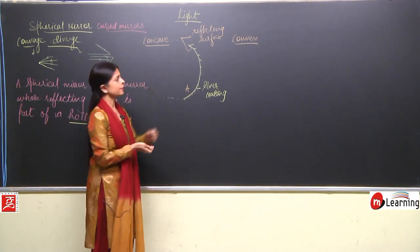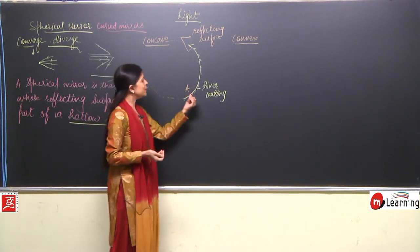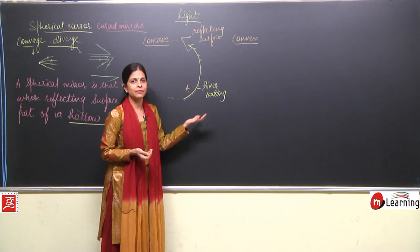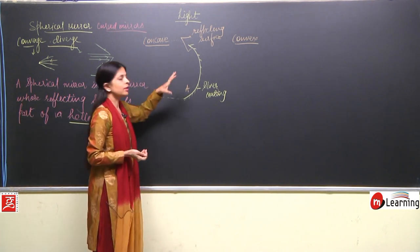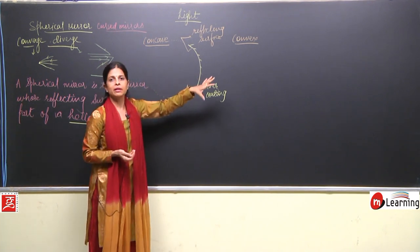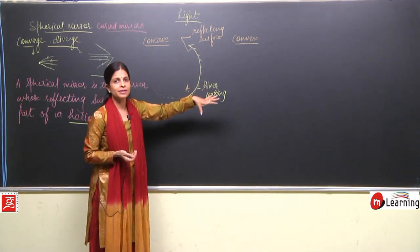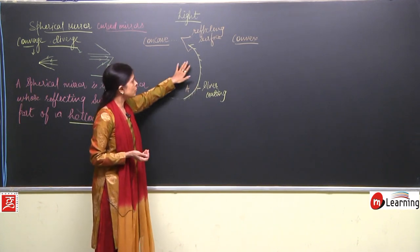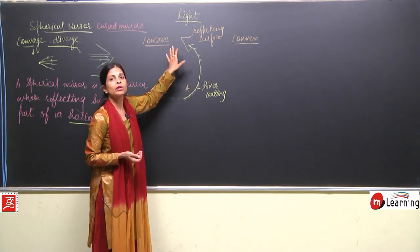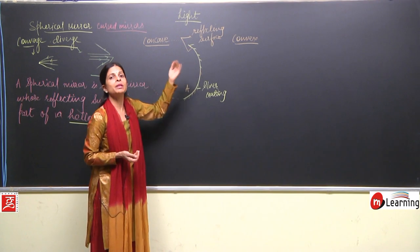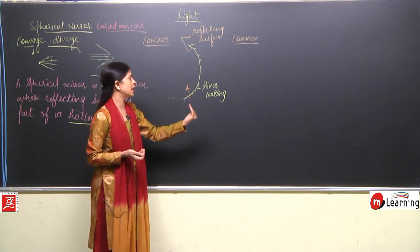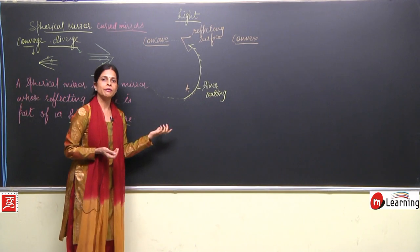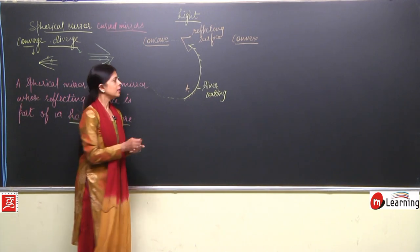Part A is the reflecting surface and part B is silver coated. Reflection cannot take place from the silver-coated surface; it takes place from the opposite concave part — the bent, inward part. So this kind of mirror is known as a concave mirror.